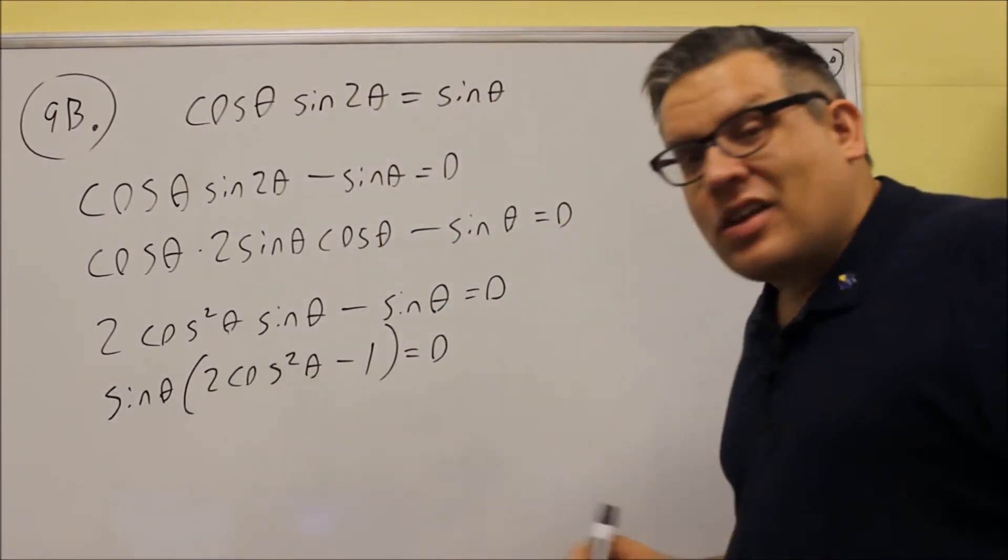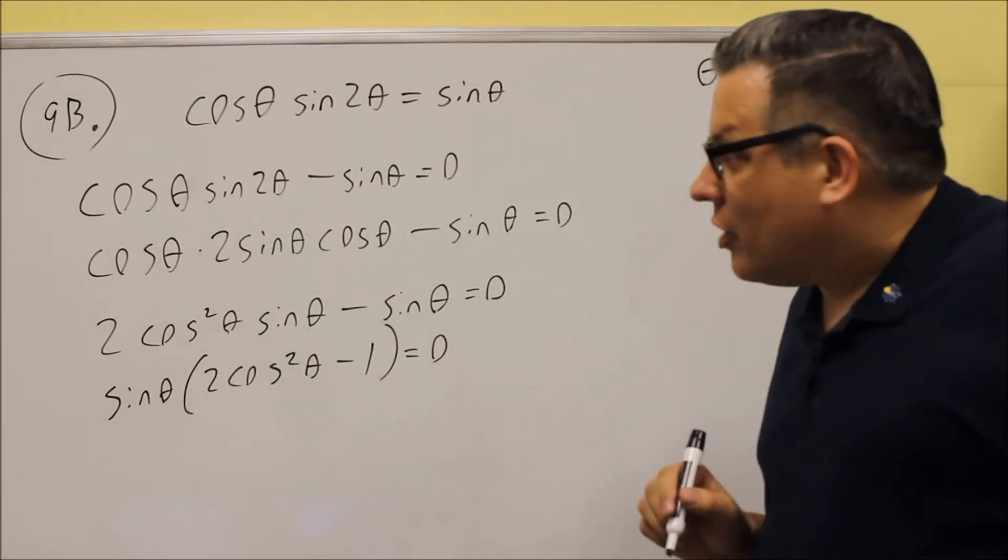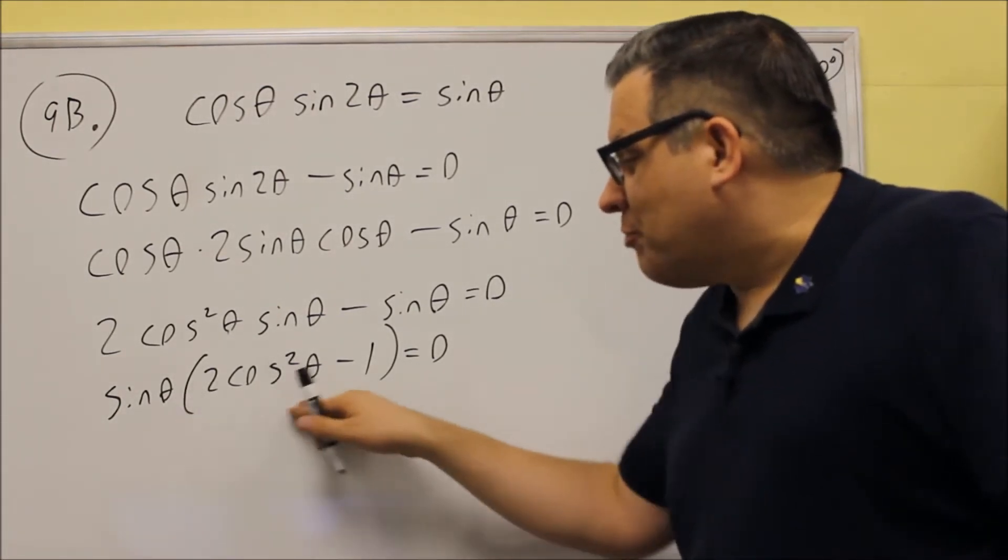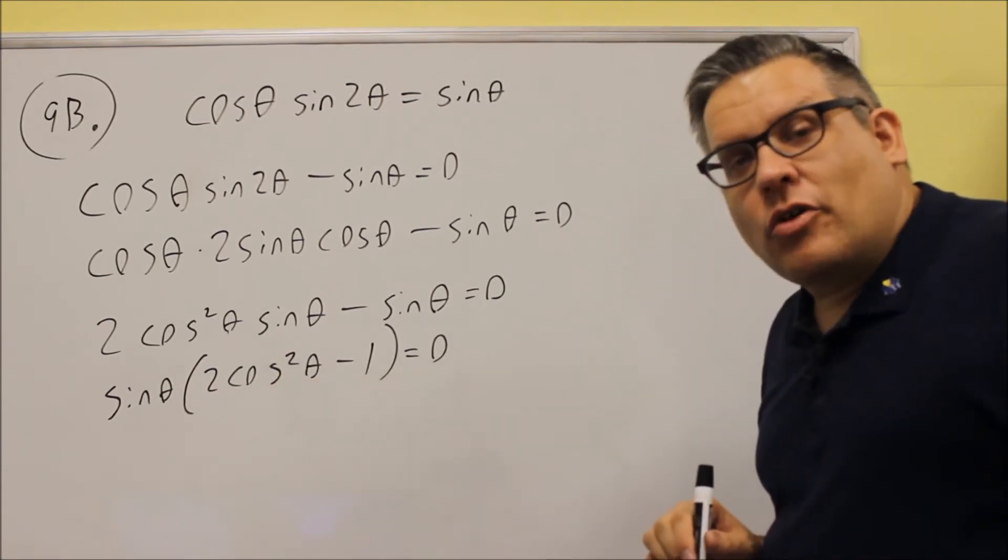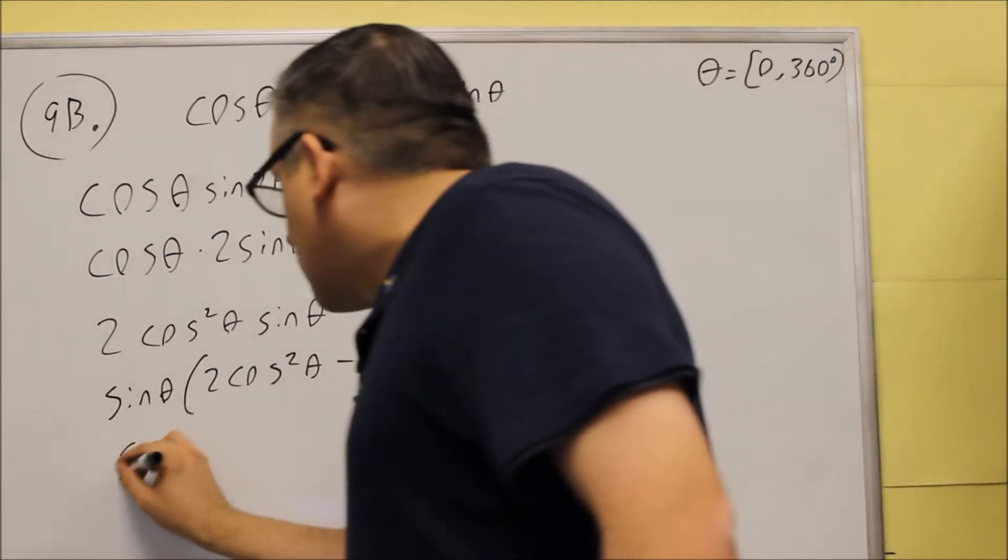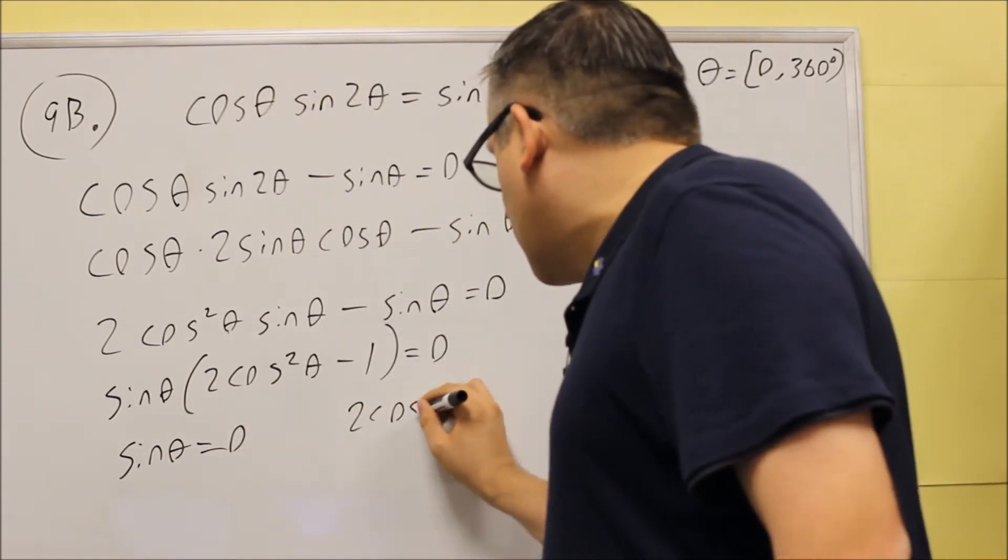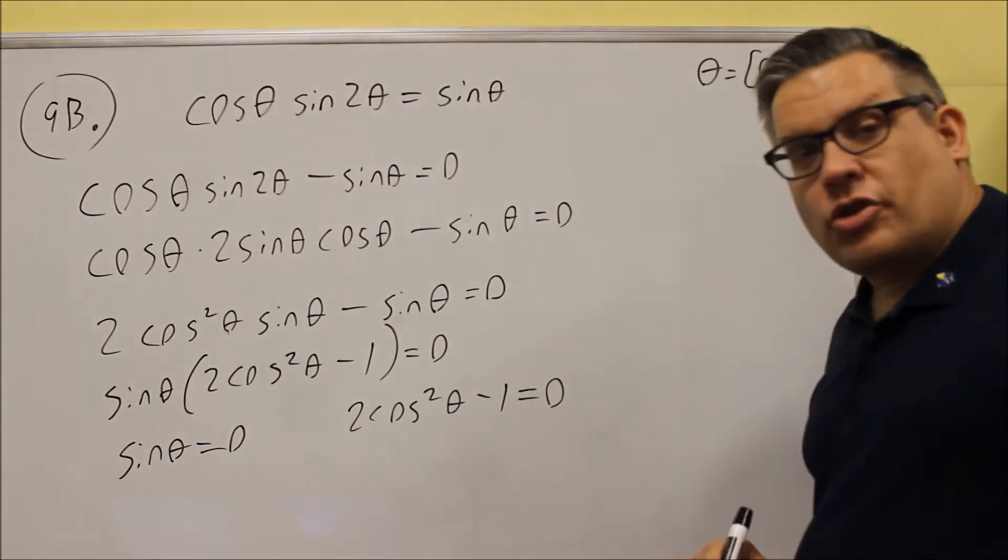Again, you want to pull out the common factor like we did before in the previous problem in 8. And now you have both of these, you're going to set equal to 0 individually. So sine theta equals 0. 2 cosine squared theta minus 1 equals 0.